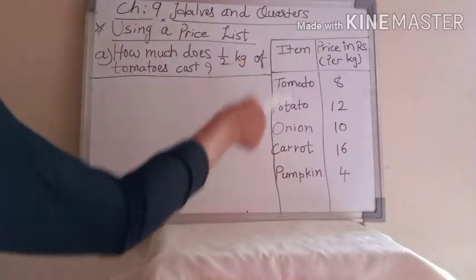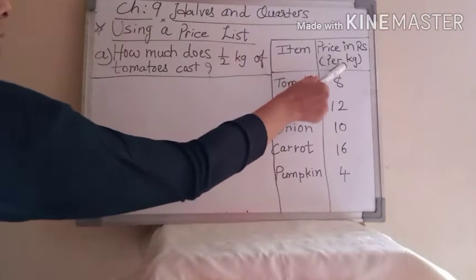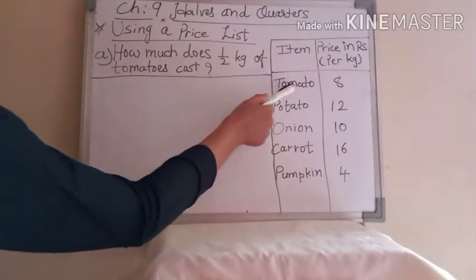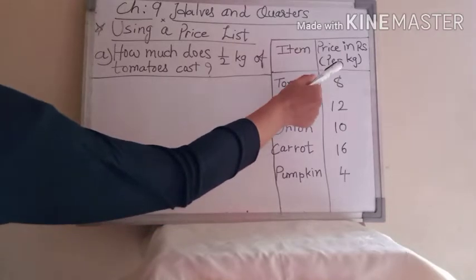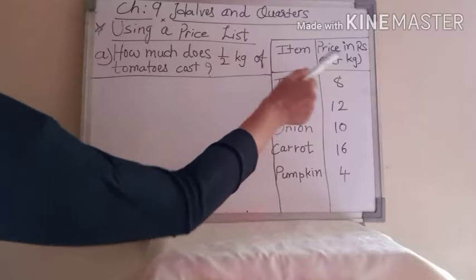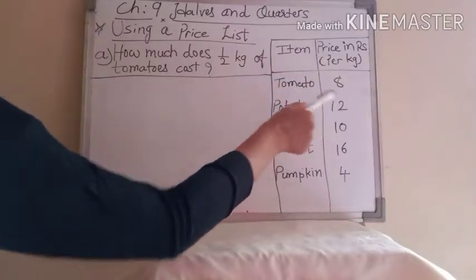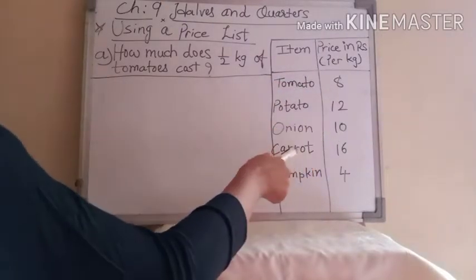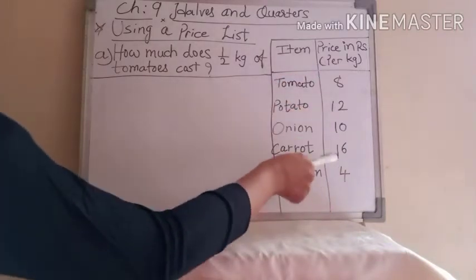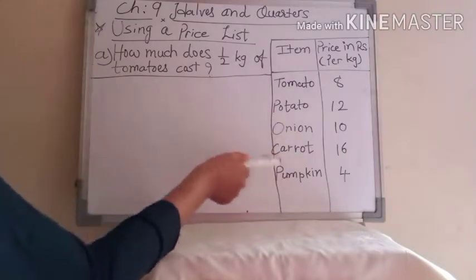Here a table is given which shows the items and another side shows the price in rupees. Tomato price is rupees 8 per kg. Potato price is 12 rupees. Onion 10. Carrot 16. Pumpkin 4. This price is given per kg for all these items.